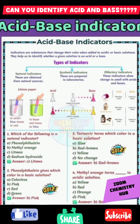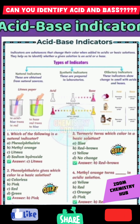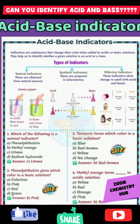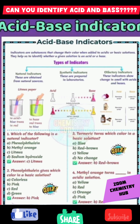Types of indicators: Natural indicators — these are obtained from natural sources. Synthetic indicators — these are prepared in the laboratories. Olfactory indicators — these show a change in smell with acid and base. Litmus paper test: in acid, blue litmus paper turns red; in base, red litmus paper turns blue.